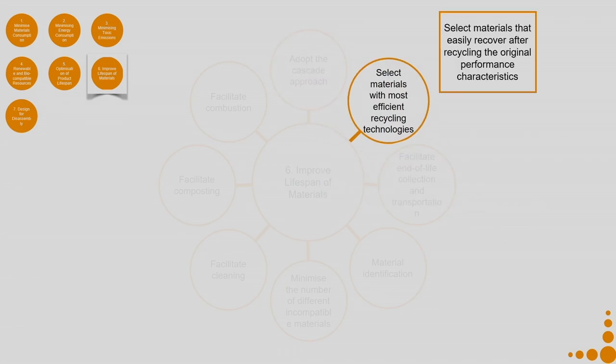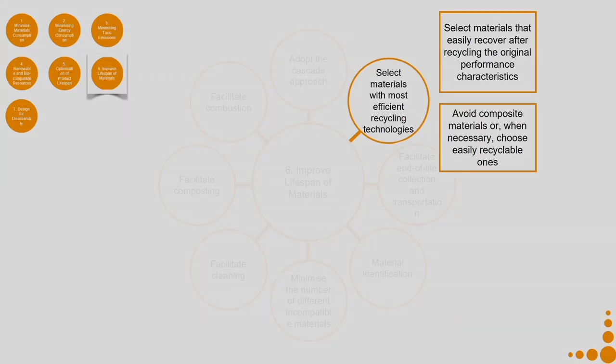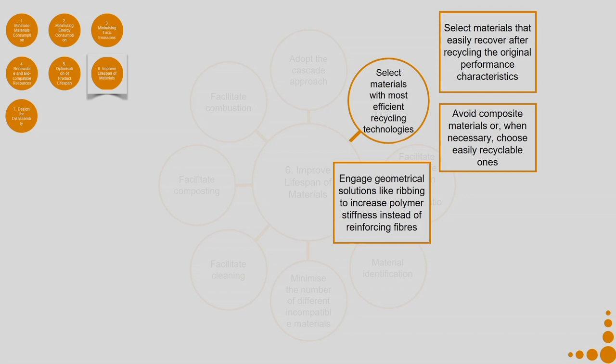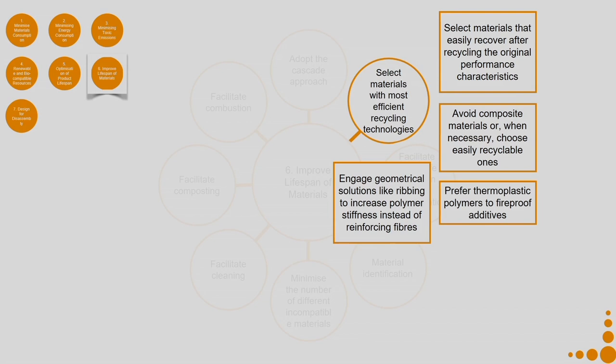Select materials that easily recover their original performance characteristics after recycling — in the case of plastics it is really difficult to achieve, but for metals it is more easily achieved. Avoid composite materials or, when necessary, choose easily recyclable ones. Engage geometrical solutions like ribbing to increase polymer stiffness instead of reinforcing fibres — when you use reinforcing fibres, it becomes a composite, making it no longer recyclable. Prefer thermoplastic polymers to fireproof additives, but when using plastic in a context where fire can happen, it is better to go with the fireproof additives.